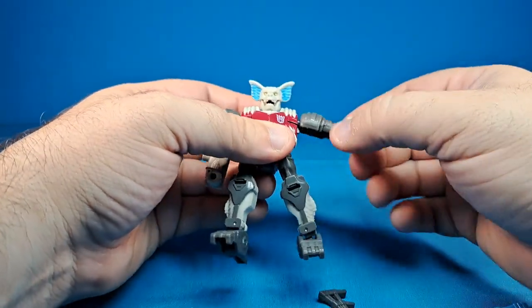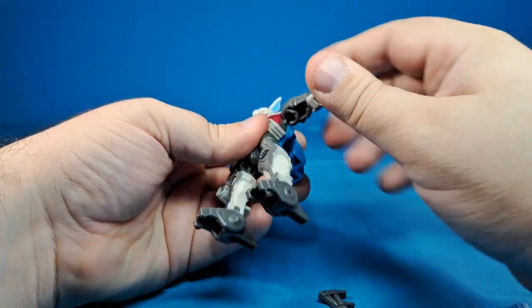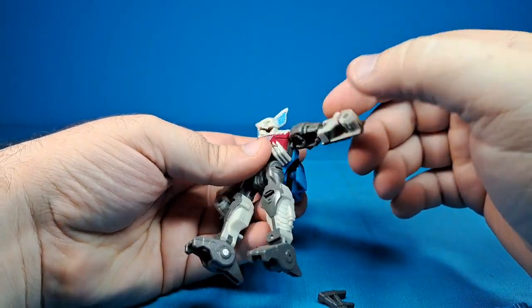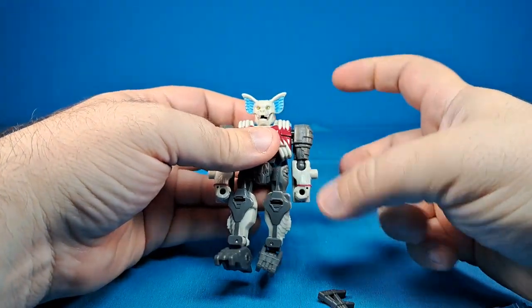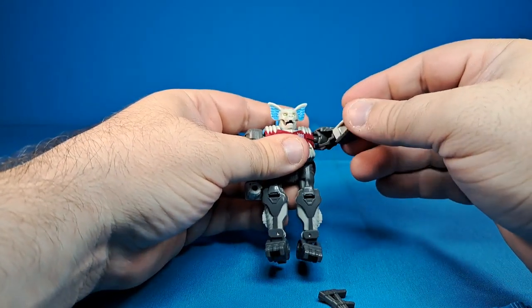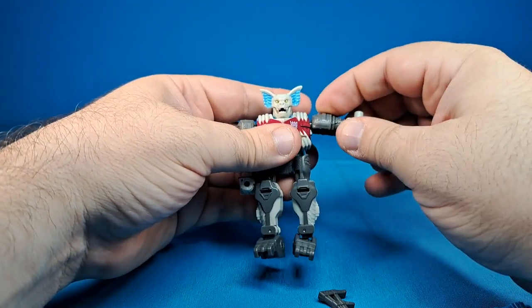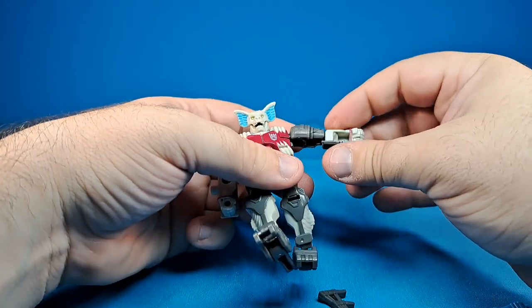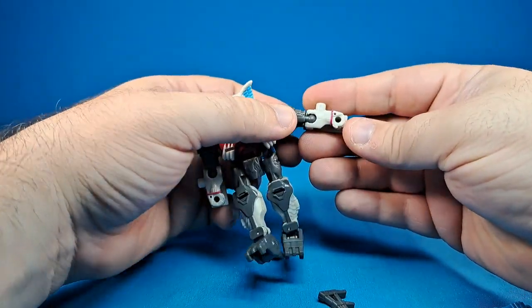His arm goes all the way around and goes out to the side for most of a T-pose. One thing I gotta point out is that there's a little peg in his armpit, and that's for lining up this arm in vehicle mode. But as a result, you can't really bring his arm forward and out at the same time. So if you want to bring his arm out it has to be like this, and then you can rotate it at the ball joint elbow.